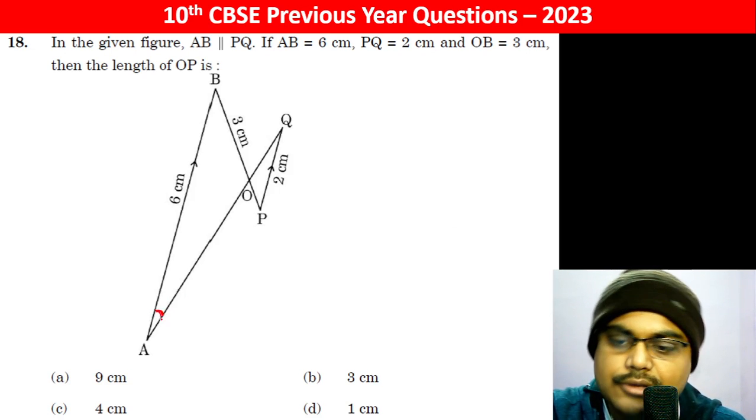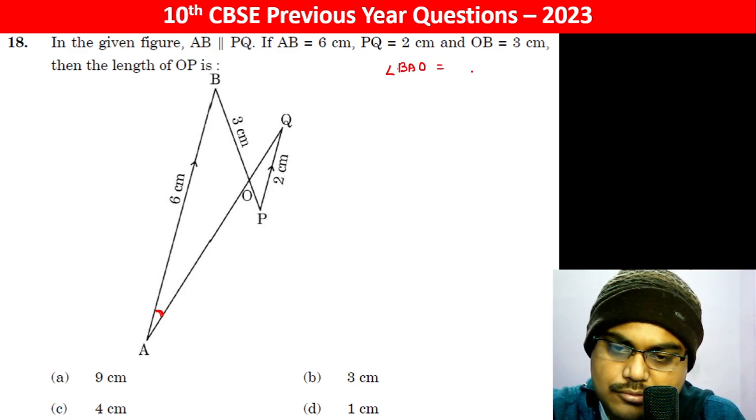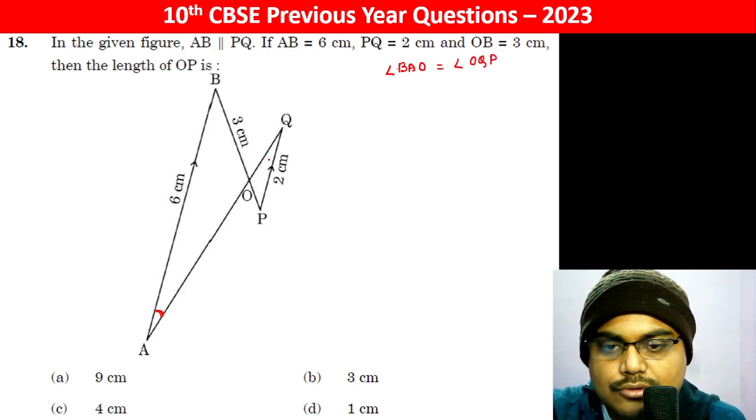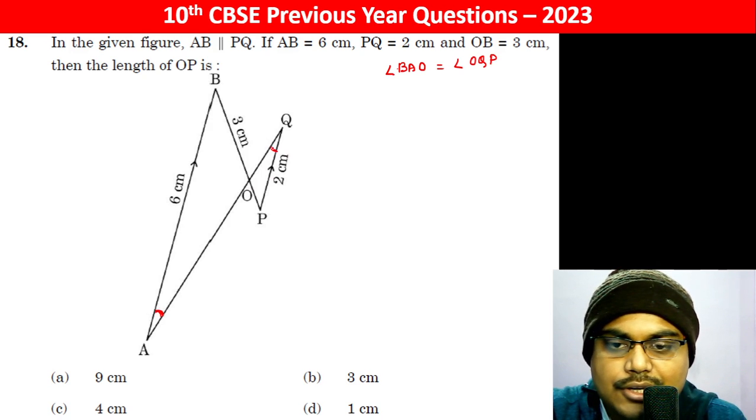If we can see this angle, angle BAO is equal to angle OQP. Why? Because this is alternate interior angle.